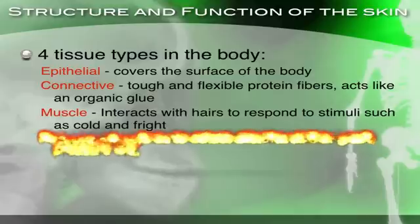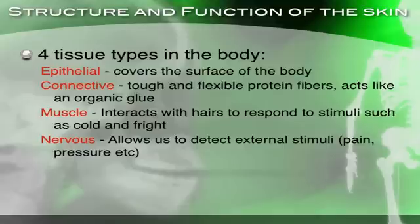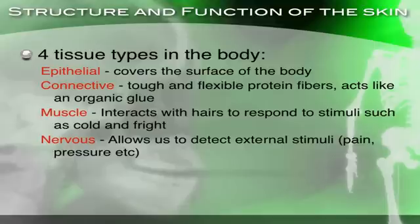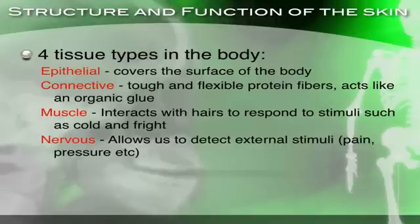Then the last type of tissue is nervous tissue. Nervous tissue allows us to detect external stimuli such as pain and pressure. If you go home, turn the hot stove on, get distracted, and put your hand on the hot stove, there's a lot of stimulation happening, sending signals to the brain. You say 'ouch' in response to it and pull your hand away. If you were not able to detect that stimulus, you would not pull your hand away — next thing you know, you have no hand. We don't want that.